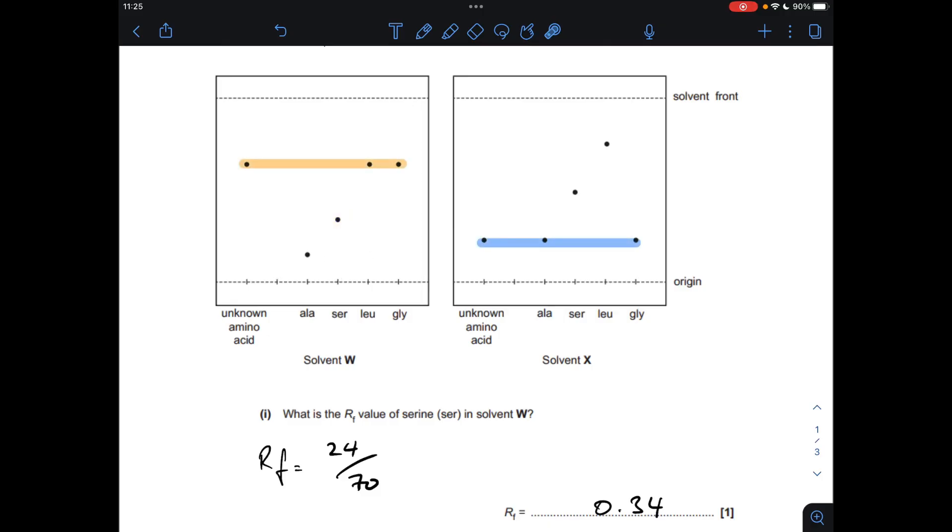In solvent W, the unknown amino acid matches the position of leucine and glycine, whereas in solvent X it's matching alanine and glycine.